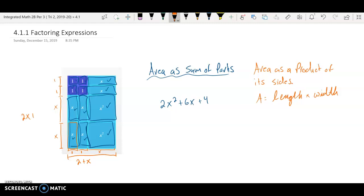So I have two x's plus two. Here are my two x's, and then plus two. So there's my length, there's my width. The area as a product of its sides.